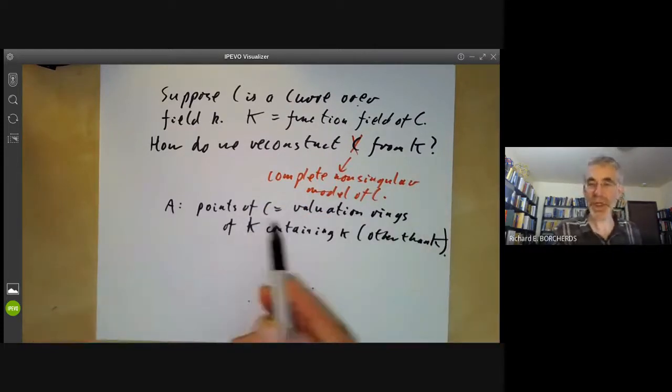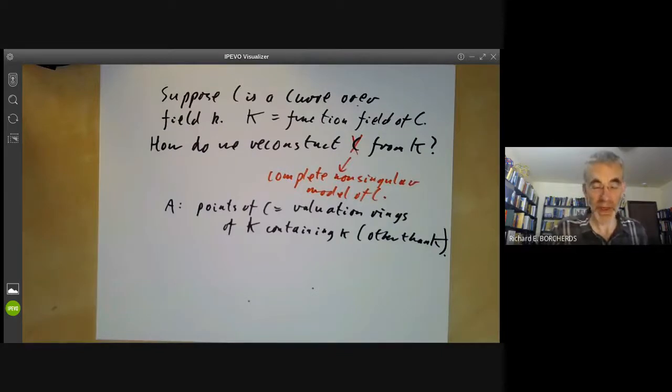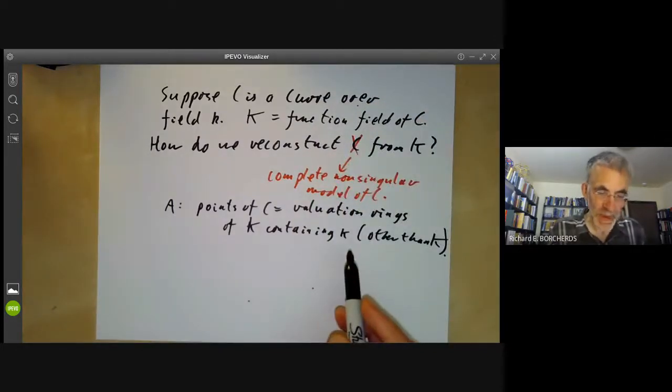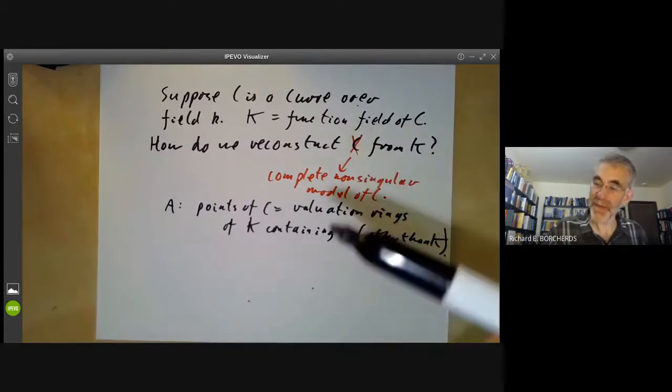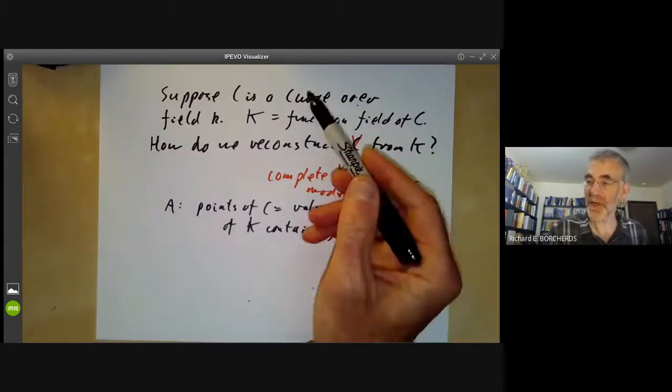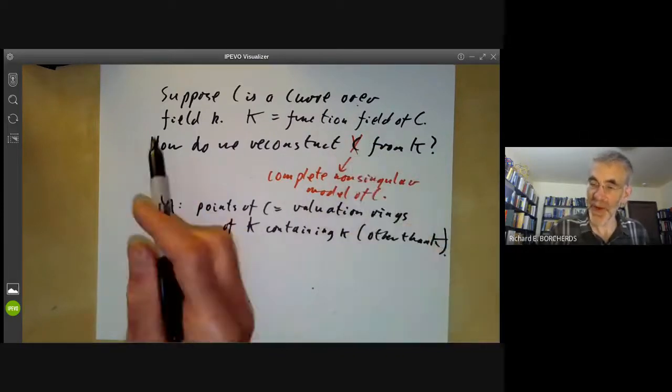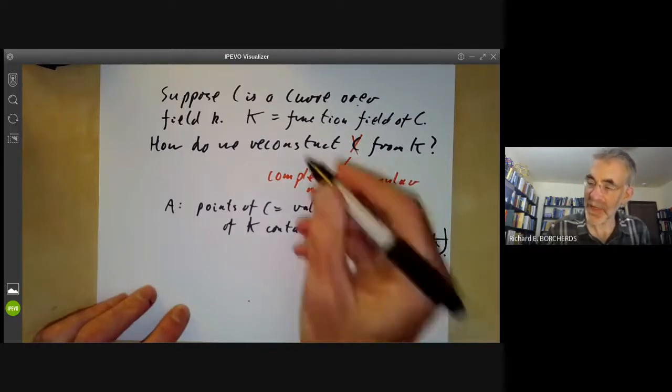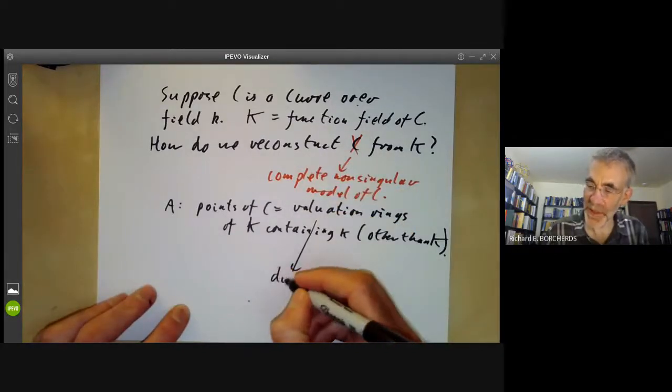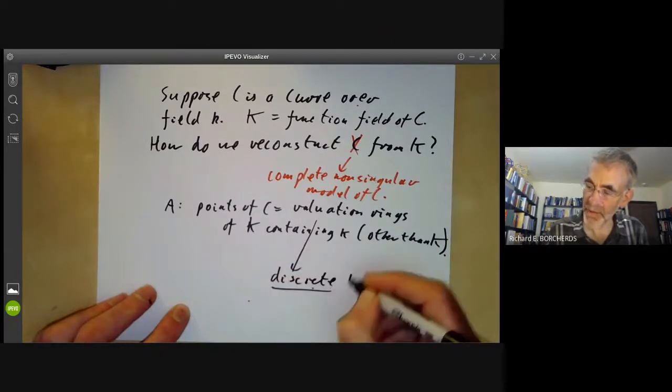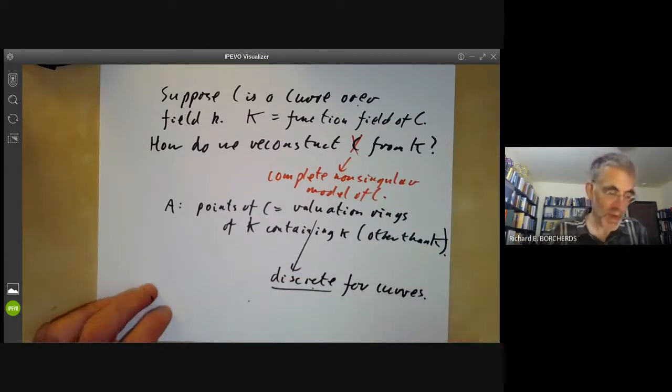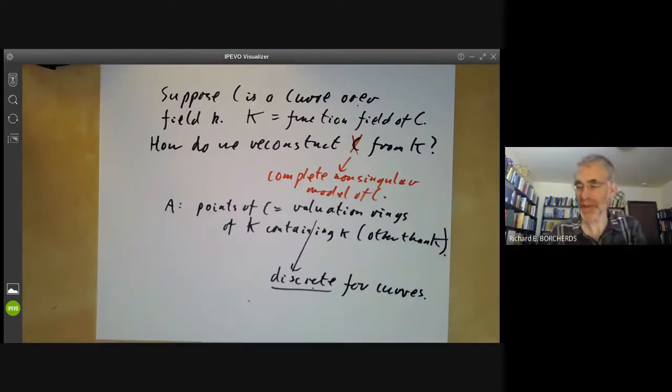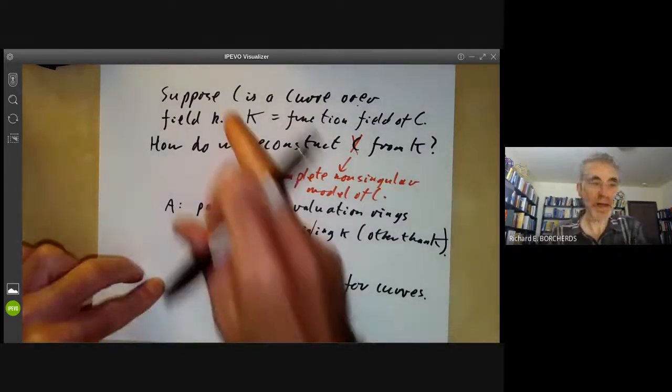And this construction was given in Hartshorne's book on Algebraic Geometry, chapter one, section six, I think. And I didn't go into that in detail, but whatever. So this gives a sort of correspondence between curves and function fields, where if you've got a function field, you just take its valuation rings. In the case of curves, these are all actually discrete for curves.